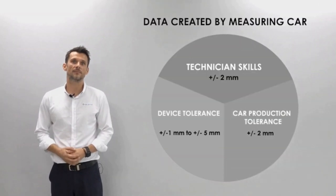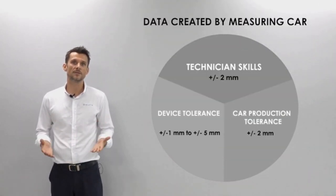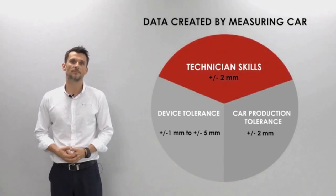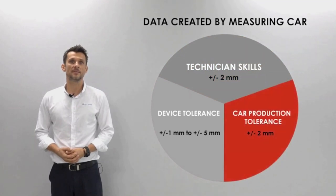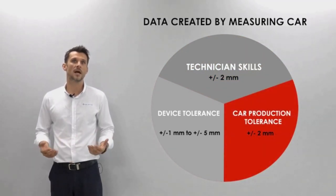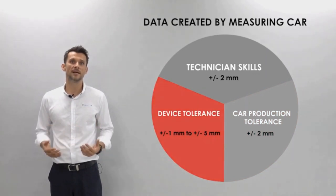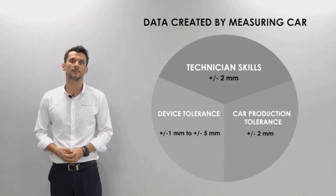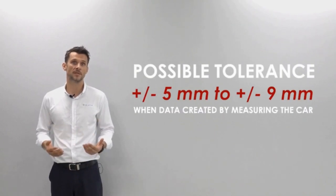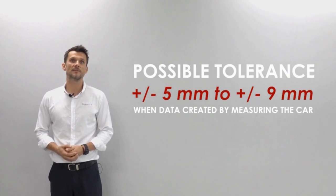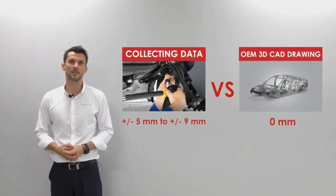As you can see on this diagram, there are three factors that can affect the tolerance. First are the skills of a technician measuring the car, which can differ from technician to technician based on his experience. Second, there is some deviation on the car itself — as we know, all cars are a bit different even right away from the production line. Third, it is the tolerance of the device used for creating the data by measuring the car. When we put all of these tolerances together, we get a number of plus or minus five to nine millimeters of possible tolerance. So even before working with a measuring system in your body shop, the difference can be five to nine millimeters, compared to data created using 3D CAD drawings where the tolerance is zero.